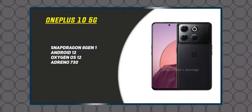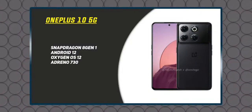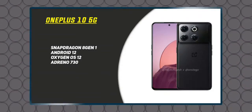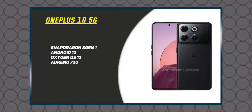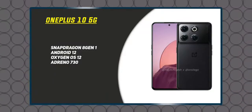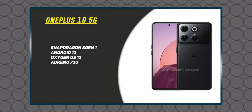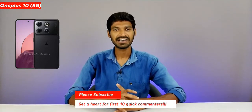The OnePlus 10 Pro is powered by the Qualcomm Snapdragon 8 Gen 1 5G processor. It runs OxygenOS based on Android 13. The Snapdragon 8 Gen 1 is a top-end processor, so you will definitely be able to make great use of this mobile device.